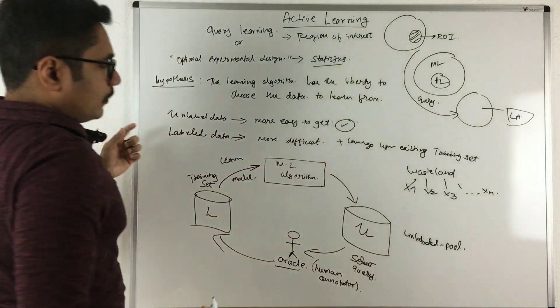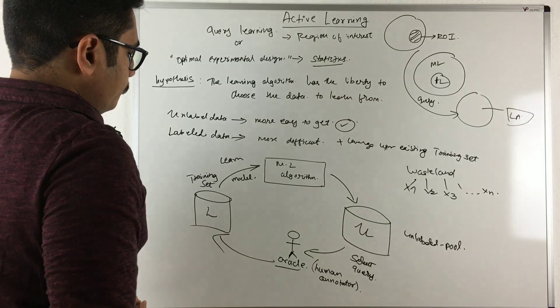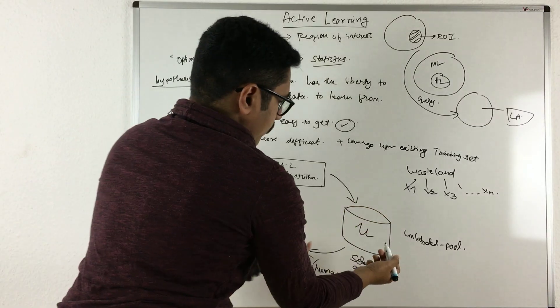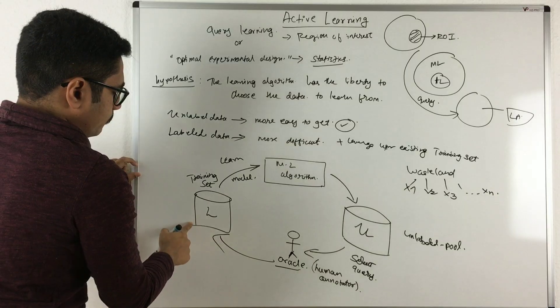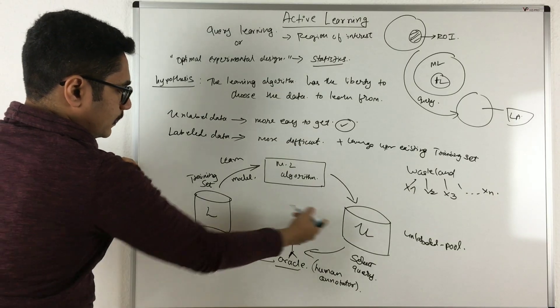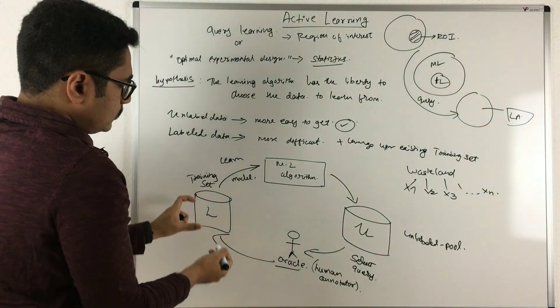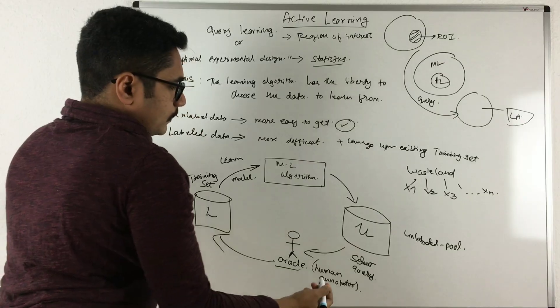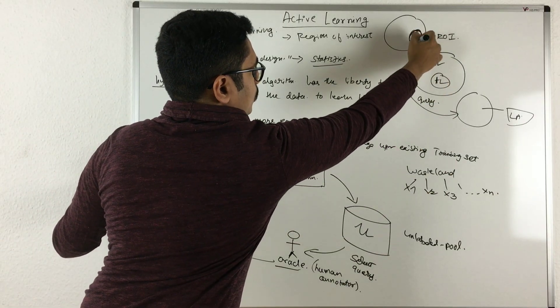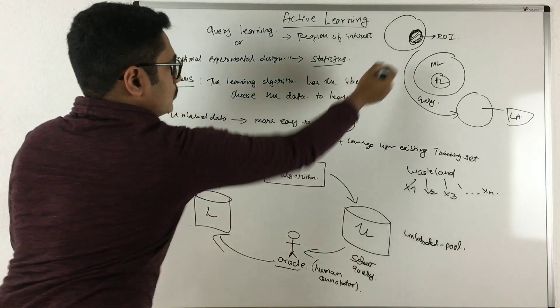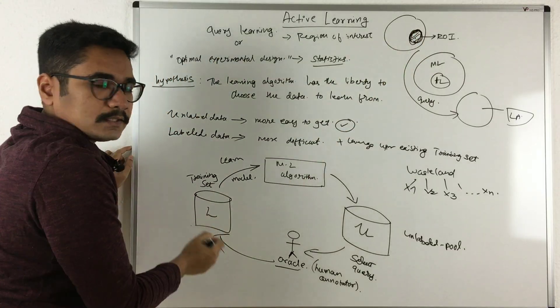So this is how your active learning system looks like. Whenever you take an unlabeled pool, obviously this is of very large size, but your actual training set would be less than this. So this size is very small as compared to this. Here from a large portion you will try to extract only a small amount. This small amount refers to your training set.